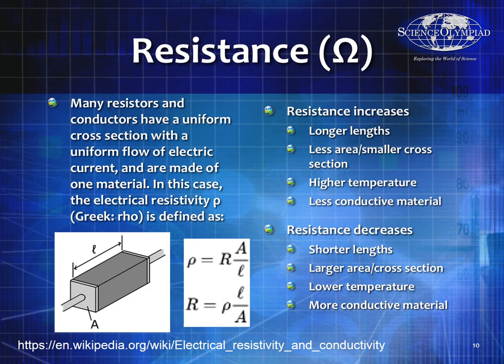Many resistors, similar to capacitance problems, are defined by the material, the surface area, and the length of the material. The formula is R equals rho times L divided by A, where rho is the resistivity of the medium. Conductors like copper have very low resistance, insulators have very high resistance, and semiconductors have medium resistance and are often used to actually make resistors. L is length and A is area — this formula should also be in your binder.